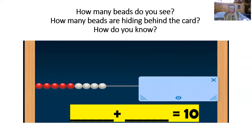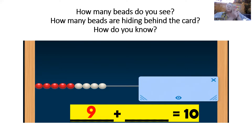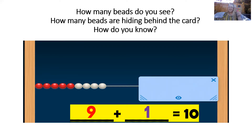How many beads are in this picture? Make that on your number rack. There are a lot of beads in this picture — it might take a moment to count them all. Yes, you got it. There are nine beads in the picture. So if there are nine beads showing, how many beads are hiding behind the card? How did you get that so quickly? You're right. There's one bead hiding behind the card. Let's read that equation together: nine plus one equals 10.